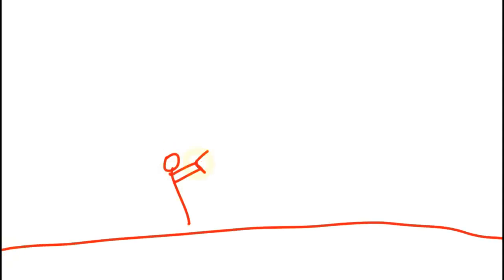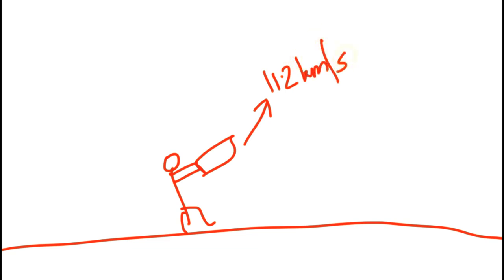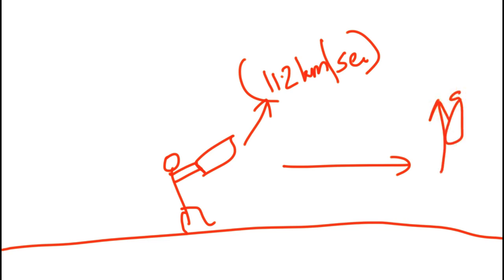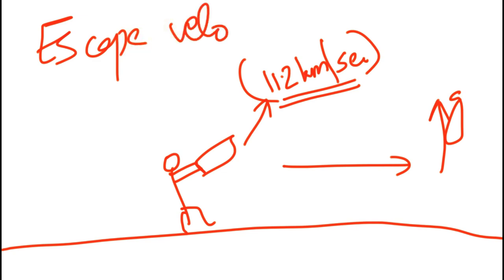The escape speed is 11.2 km per second. If we add the object to that speed, the object will be moving away from the boomi. This is how escape velocity works — the object escapes from the boomi at that same value.